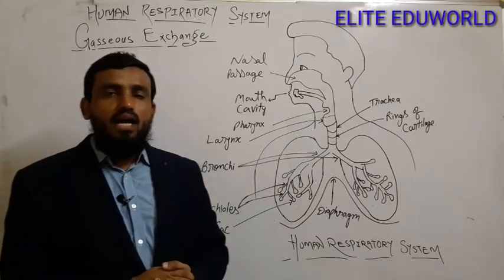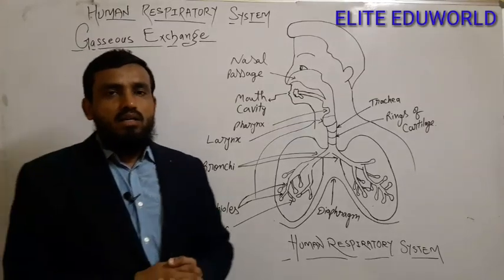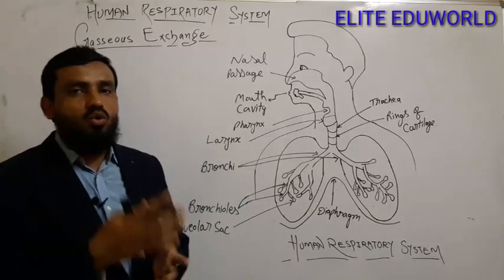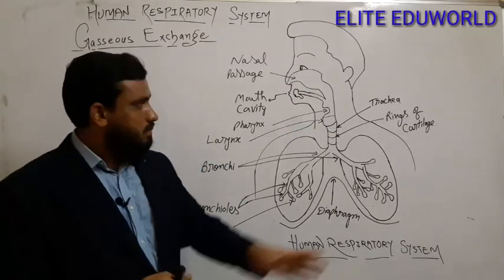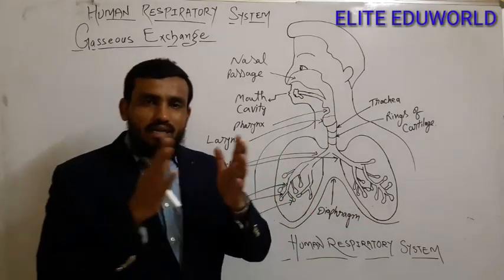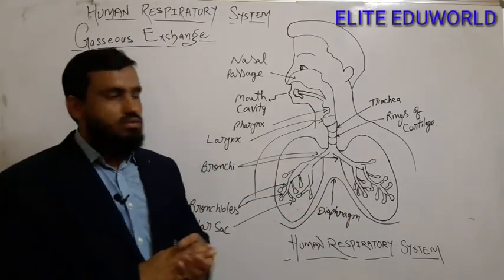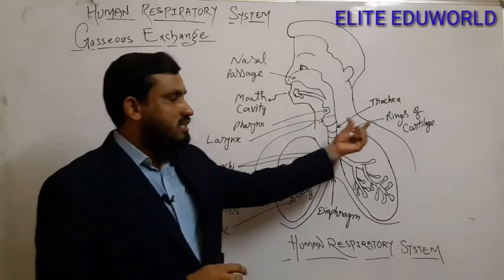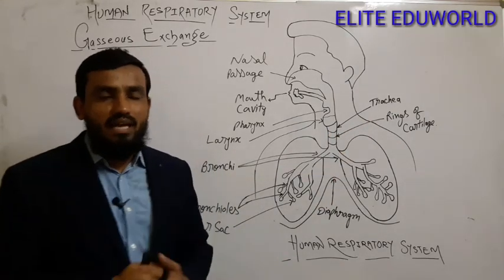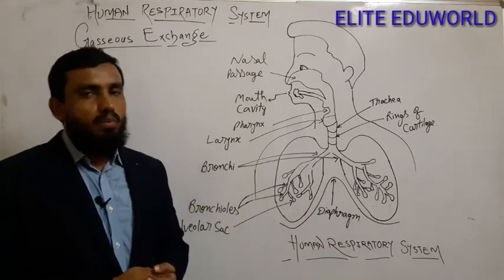The rings of cartilage protect the trachea and also prevent it from collapsing when there is no air. So the function of the rings of cartilage is to give strength to the trachea and prevent it from collapsing.